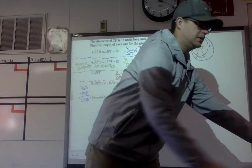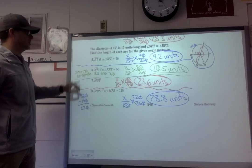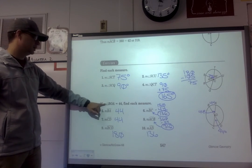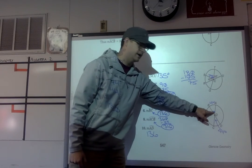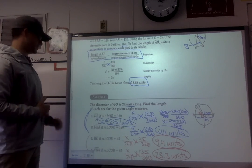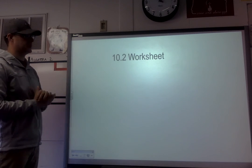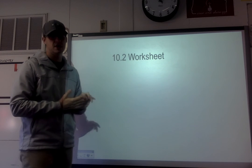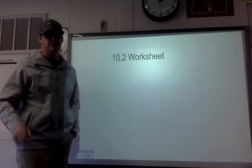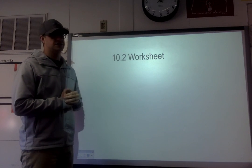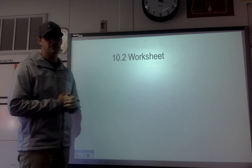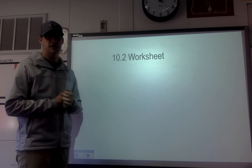The key as you work on today's assignment is making sure you pay attention to whether they're asking you to find the length of each arc or the measure of each arc. If it's the measure, it's just equal to the interior angle. If you're finding the length, use the proportion arc over circumference equals measure over 360. Your homework is the 10.2 worksheet on Google Classroom. You can submit a photo of paper work or a Google Doc with your answers — either way works.